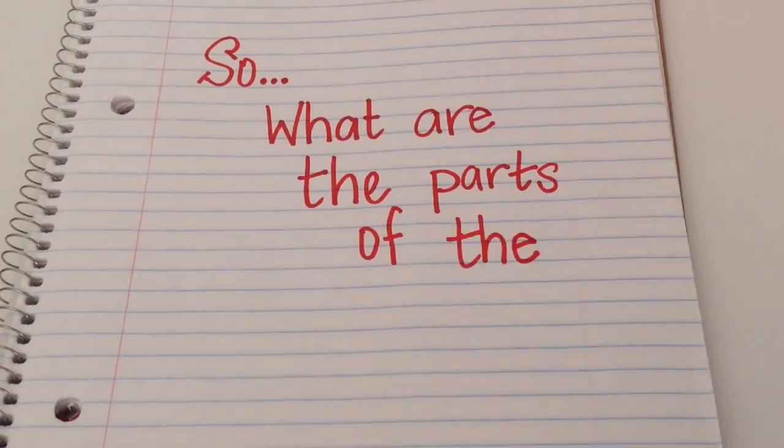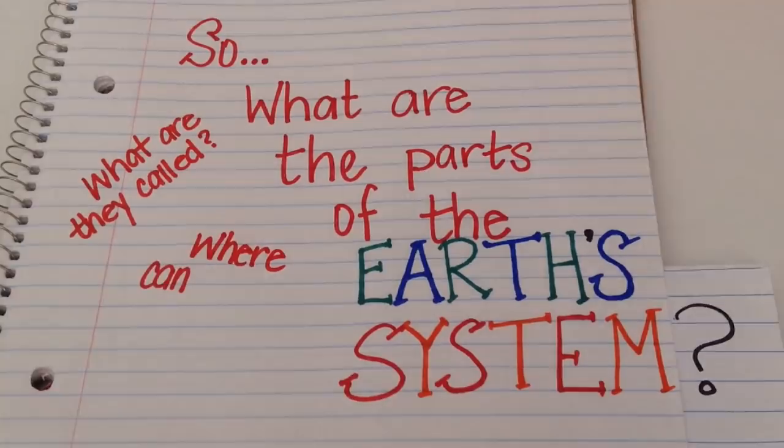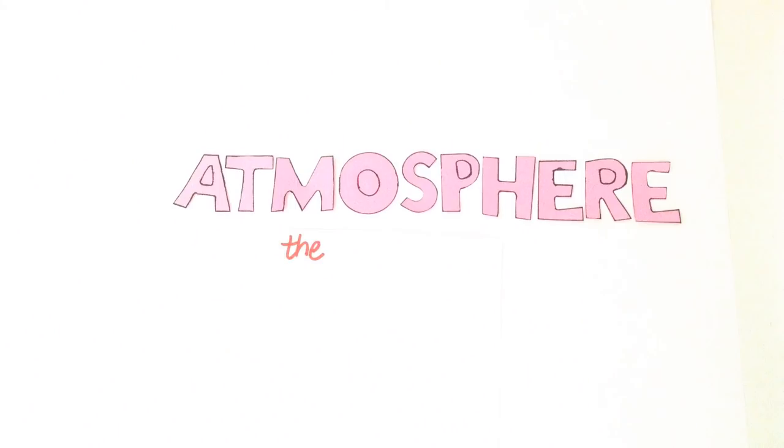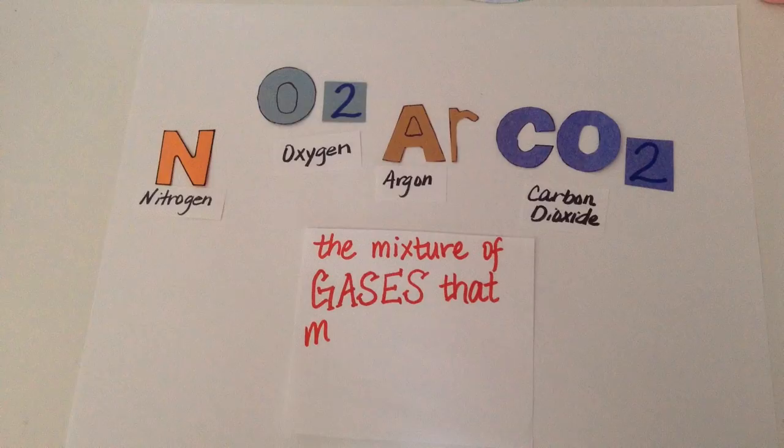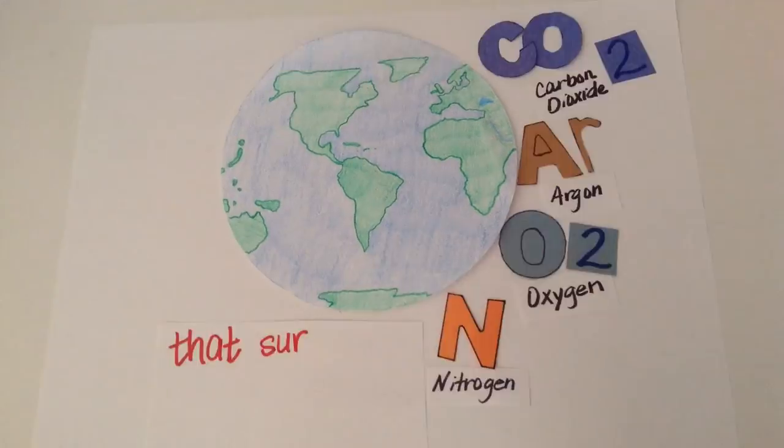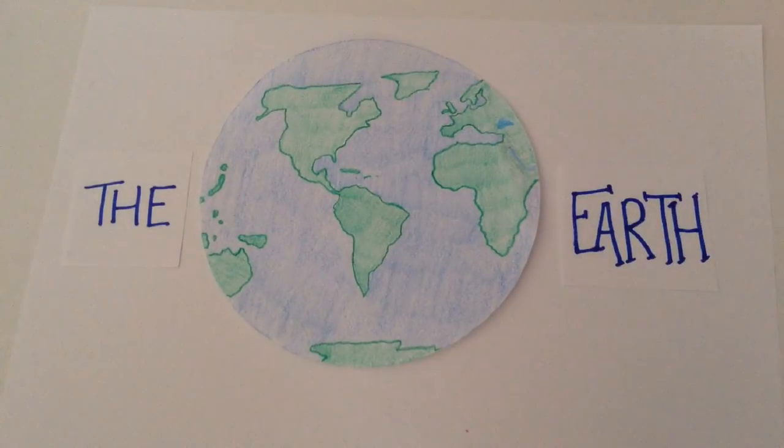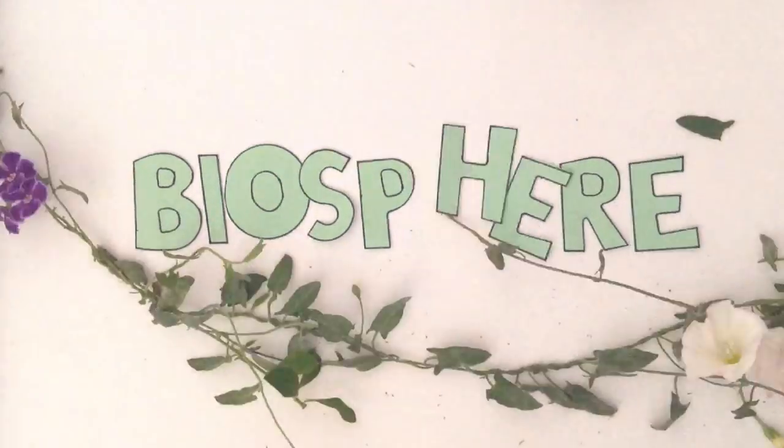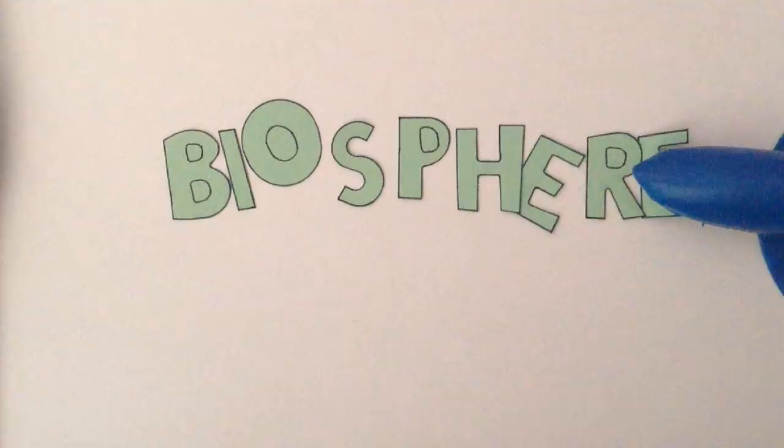So, what are the parts of the Earth's system? The first part is called the atmosphere. The atmosphere is the mixture of gases that make up the air that surrounds the Earth. Then there's the biosphere. The biosphere consists of all living things on Earth.